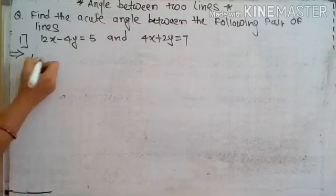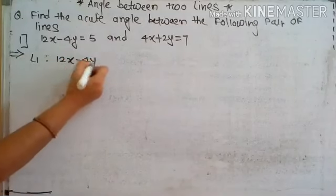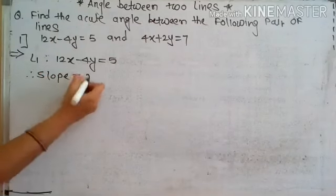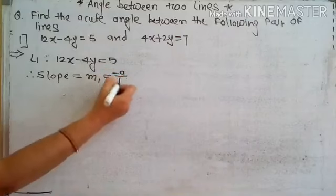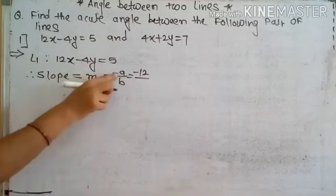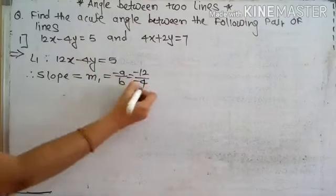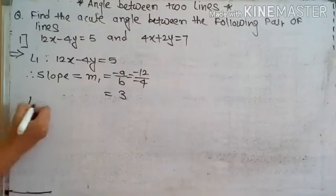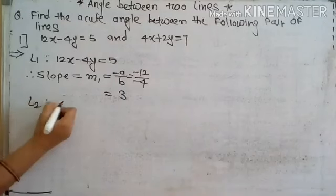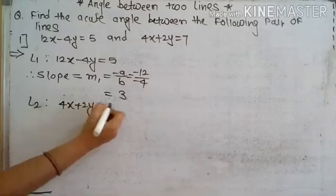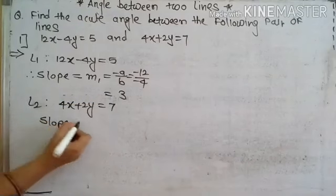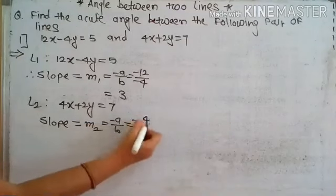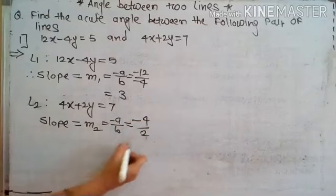We consider L1 as 12X minus 4Y equal to 5. Therefore the slope of L1 is M1 equals minus A upon B, that is minus 12 upon minus 4, which equals 3. Then for the second line L2: 4X plus 2Y equal to 7. Slope M2 equals minus A upon B, that is minus 4 upon 2, which equals minus 2.